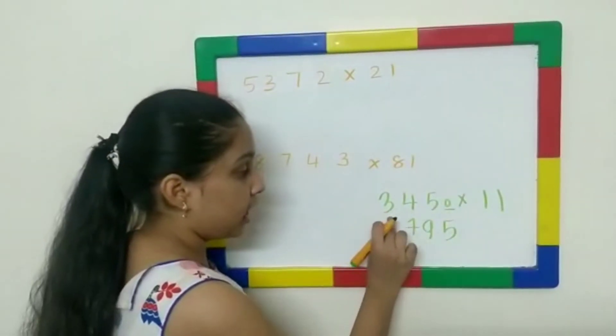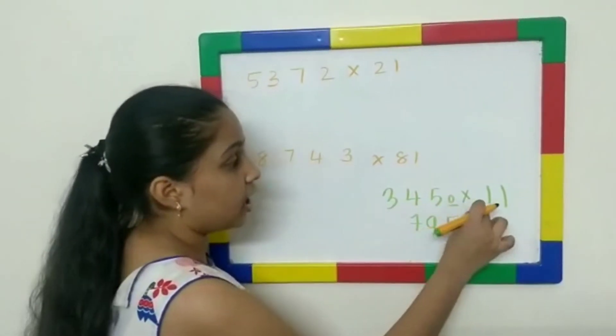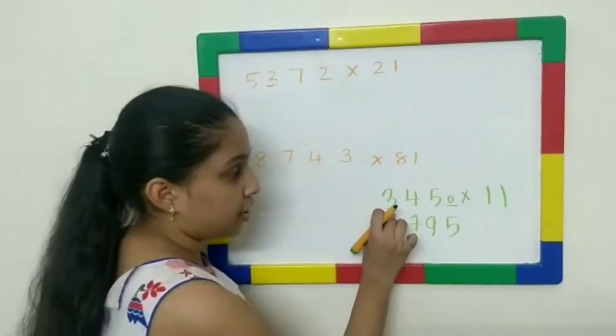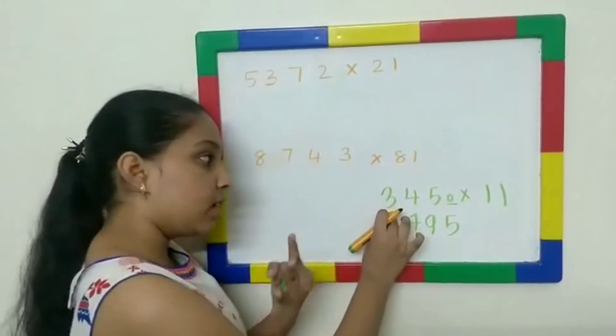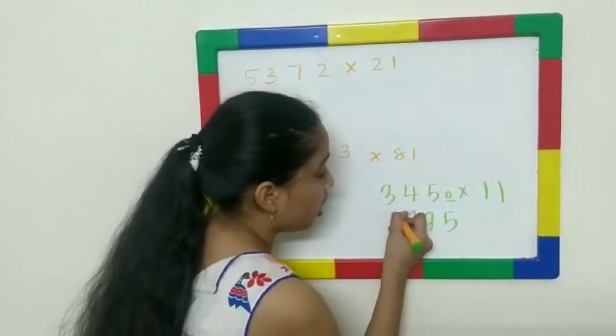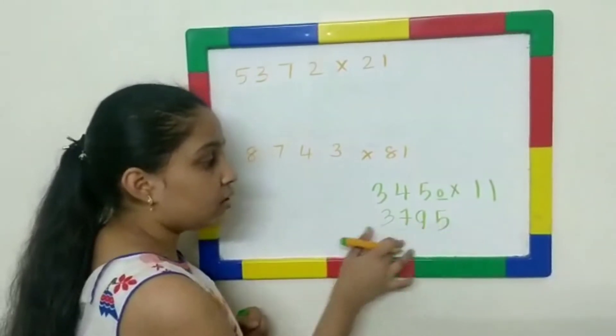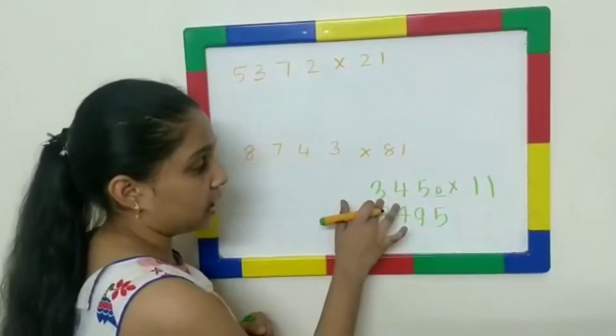Then, since 3 is now left, these 3 are done, 3 is left. So, 1 multiplied by 3 gives 3. So, write that 3 down, since we don't have any number left before it. So, now, if you see, this will be the right answer when you multiply.